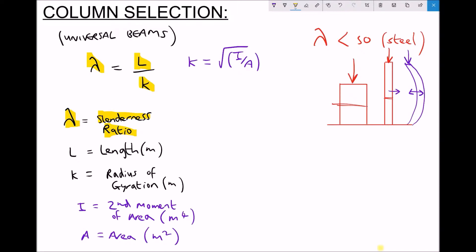For steel, a lambda value of less than 50 is considered a short member, meaning we're only concerned with direct loading. For a lambda value above 50, we need to start considering the effects of lateral deflection, and hence the likelihood of buckling increases.